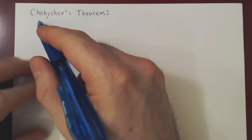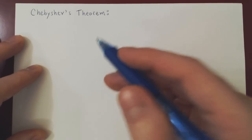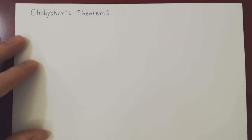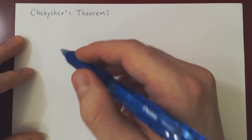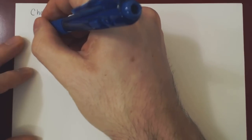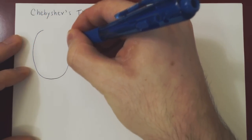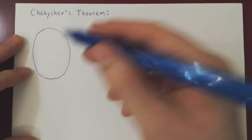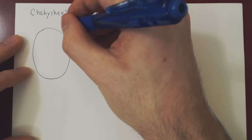In this video, we will cover the so-called Chebyshev's theorem. Here's the setup, and this setup will illustrate what is the philosophy behind statistics. The idea is we want to extract information about an entire population. Suppose that we have a population — think of it as a region — so we think of this being our entire population.